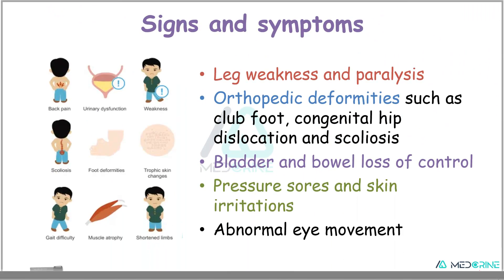What are the common clinical features of children who have Spina Bifida? Babies with Spina Bifida may present with leg weakness and paralysis, orthopedic deformities such as club foot, congenital hip dislocations, scoliosis, and foot deformities. They may also have bladder and bowel loss of control due to nerve damage, pressure sores and skin irritations, trophic skin changes, and abnormal eye movements.